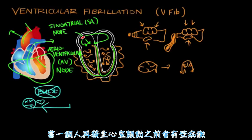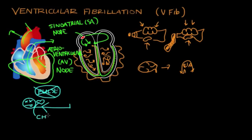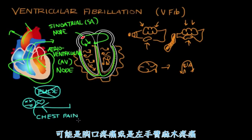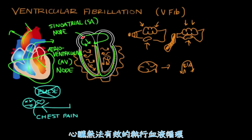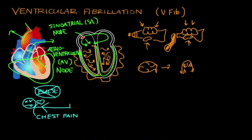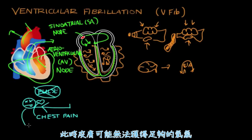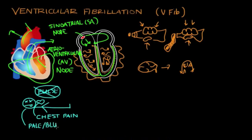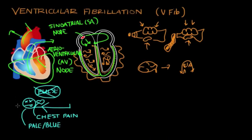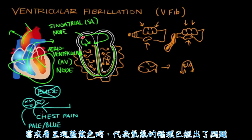Sometimes, right before someone collapses from ventricular fibrillation, they might complain of signs or symptoms of a heart attack, like chest pain or numbness or tingling in their left arm — because their heart is getting deprived of oxygen. Since the heart isn't circulating blood to itself, and since skin isn't getting oxygenated blood, you might see the skin turn pale or even blue, which is known as cyanosis.